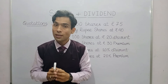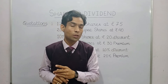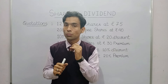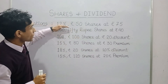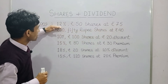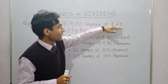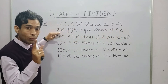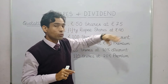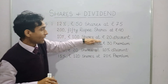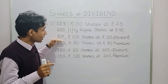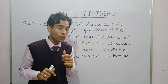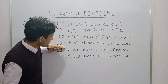Shares and dividend is a chapter based on word problems, and extraction of information is very important. Let us see how to extract information from quotations. First: '12% ₹50 shares at ₹75' — 12% is dividend, ₹50 is nominal value, ₹75 is market value. Second: '250 ₹50 shares at ₹40' — 250 is number of shares, ₹50 is nominal value, ₹40 is market value. Third: '10% ₹100 shares at ₹20 discount' — 10% is dividend, ₹100 is nominal value, ₹20 discount; subtract 20 from 100 to get market value of ₹80.